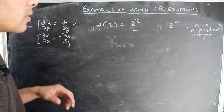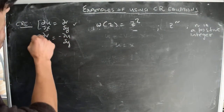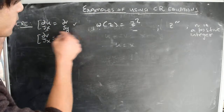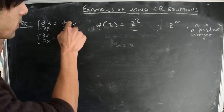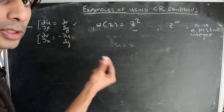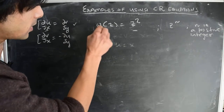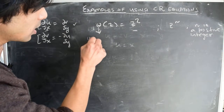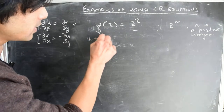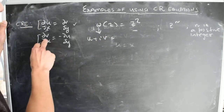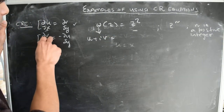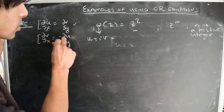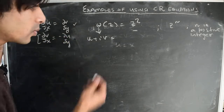As a reminder, the Cauchy-Riemann conditions require that the partial derivative of U with respect to X should equal the partial derivative of V with respect to Y, where U and V are the real and imaginary parts of the function U+iV. And the partial derivative of V with respect to X should equal minus the partial derivative of U with respect to Y.